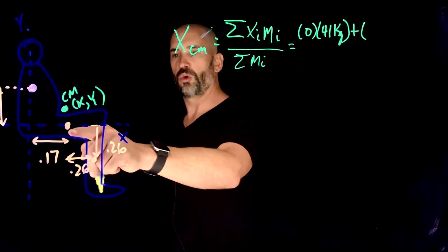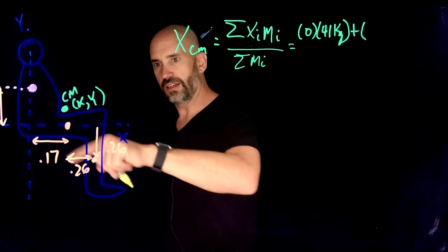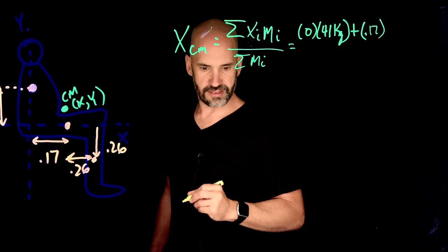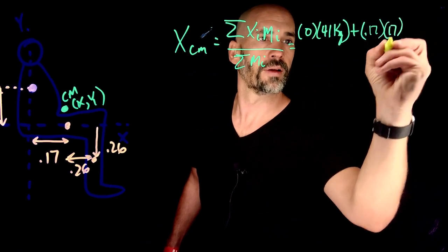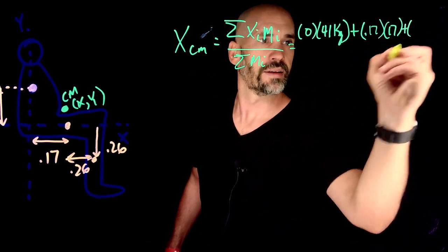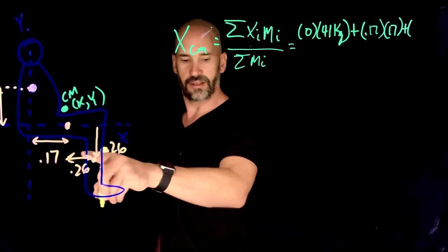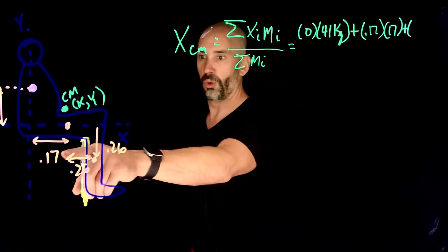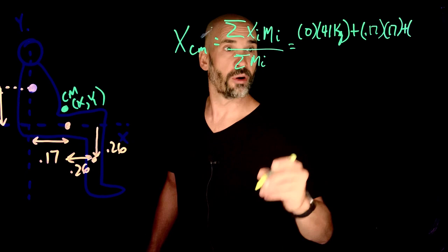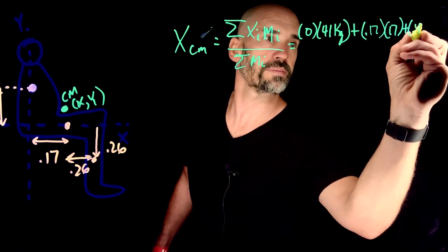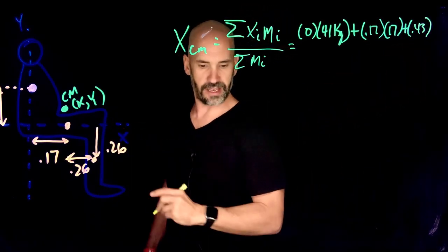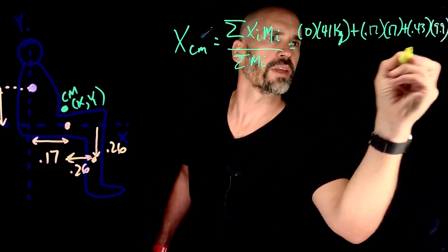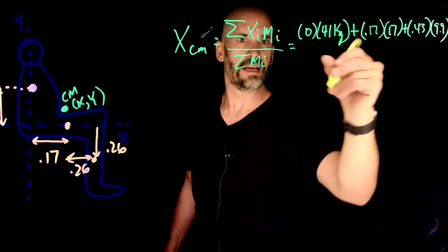Plus, what is the x coordinate of our next point, which is the upper legs? That's 0.17. And what is the mass of the upper legs? 17 kilograms. And then what is the x coordinate of the lower legs? Well, we've got to add our 0.17 and our 0.26, and I get 0.43 when I do that. And then what is the mass of this lower leg? That is just 9.9 kilograms.